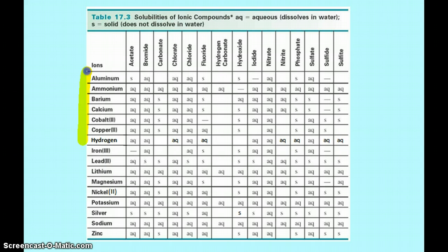So down here, aluminum through zinc — those are all positive ions. And across the top up here, all negative ions, anions, acetate through sulfite.